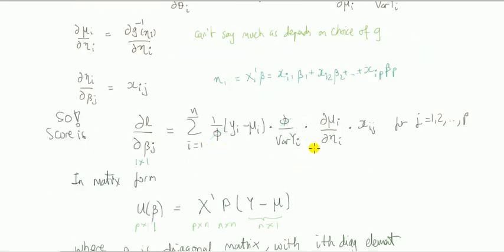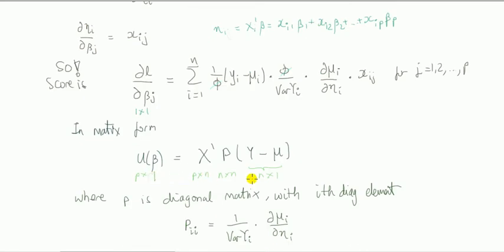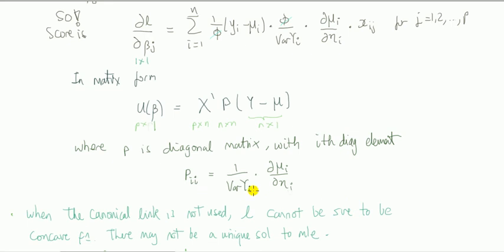Okay, so this is just for the j-th component. So then we'll have j is equal to 1 to p. Stack them all together. We can write it in matrix form like so. Where P is a diagonal matrix, where the i-th diagonal element is this. Okay, for those of you who want to kind of think a bit more, this is related to the first one where we did it with the canonical link. So think about what this expression becomes when we use the canonical link. Right, moving on.